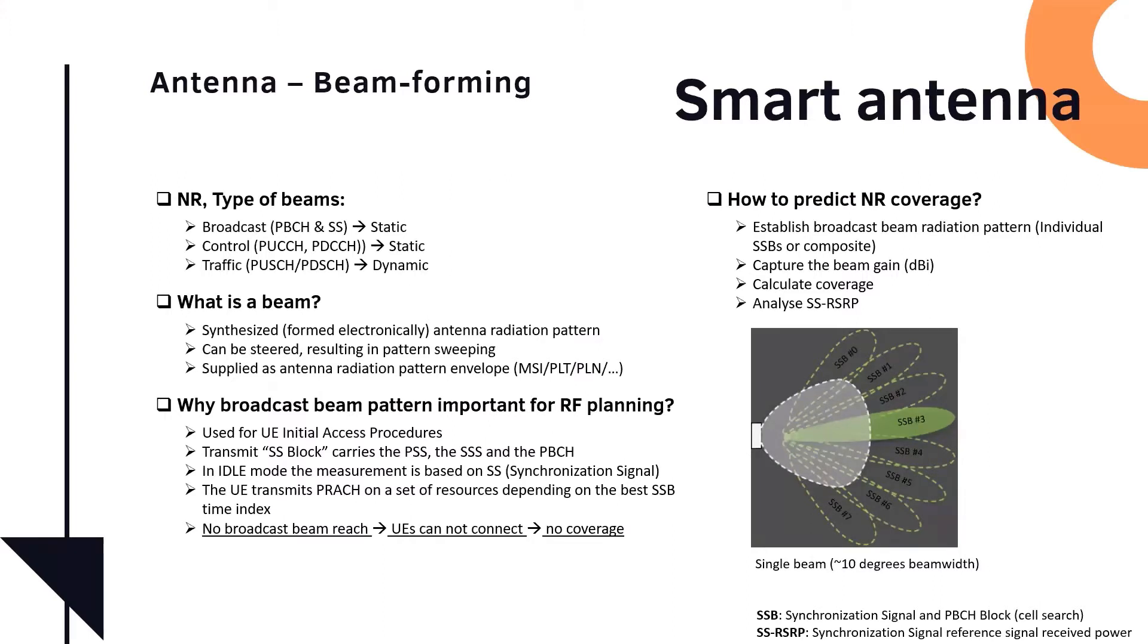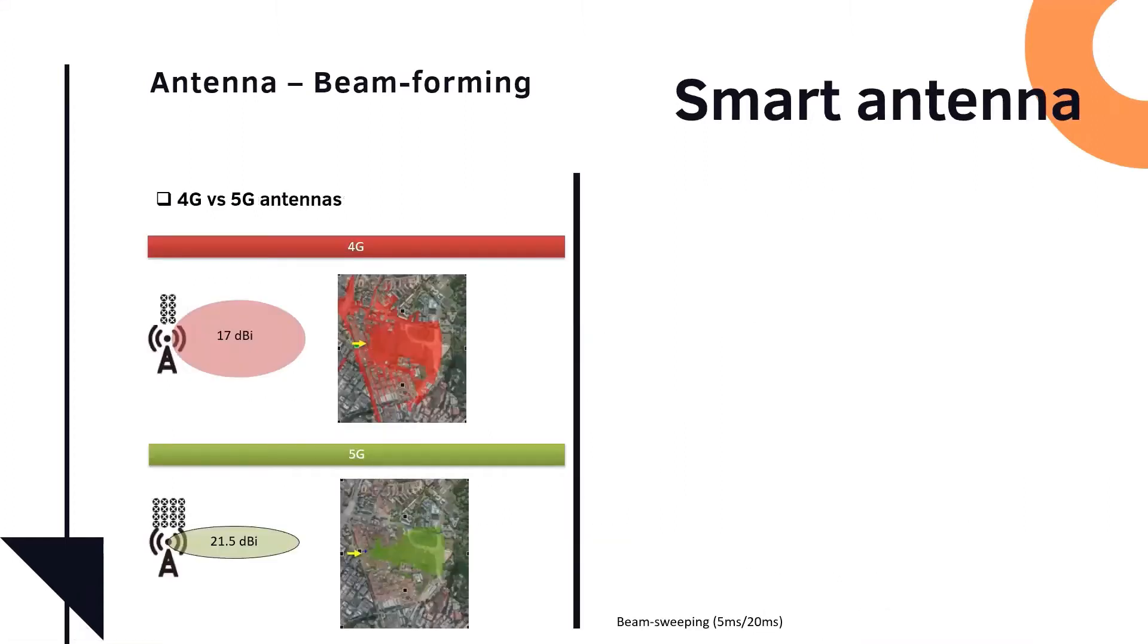So if there's no broadcast beam, there's no PRACH, you can't approach the base station on the uplink. So all this is dependent on the SSB. How do you predict coverage? So first, you establish the broadcast beam and they might give you individual beams. If they give you individual beams, you have to combine them. And then we have to capture the antenna beam, the beam gain for the SSB, and calculate the coverage and then do the SSRSRP analysis.